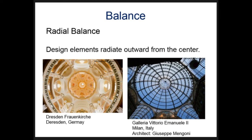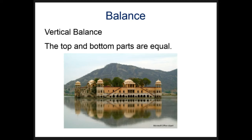We also have radial balance — think of things radiating out from the center. In each case we can see the center with concentric circles going out. Not all the circles are the same size, but going around the circle we see the same sort of pattern repeated.